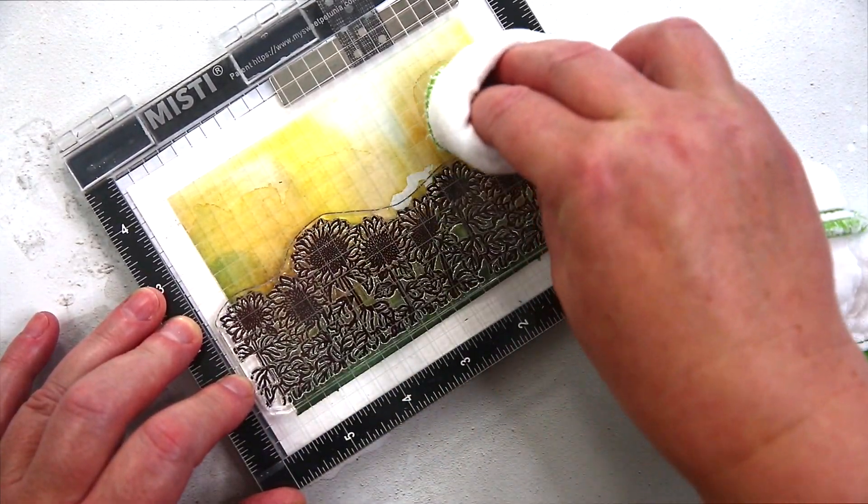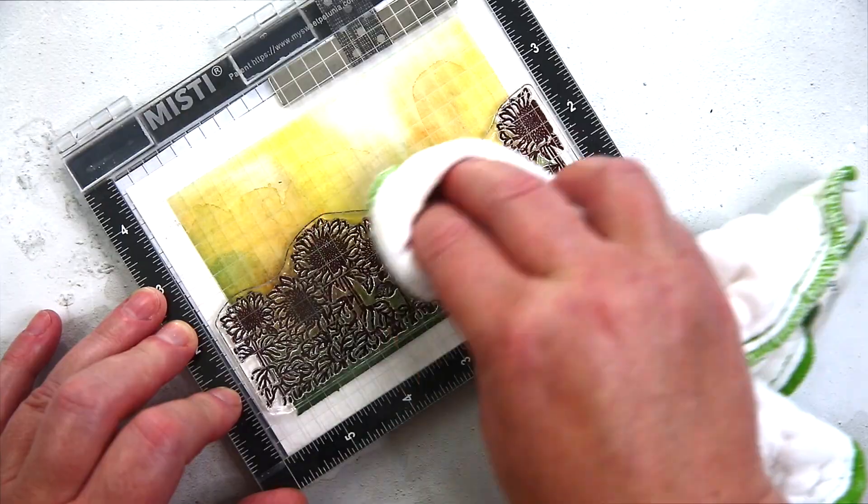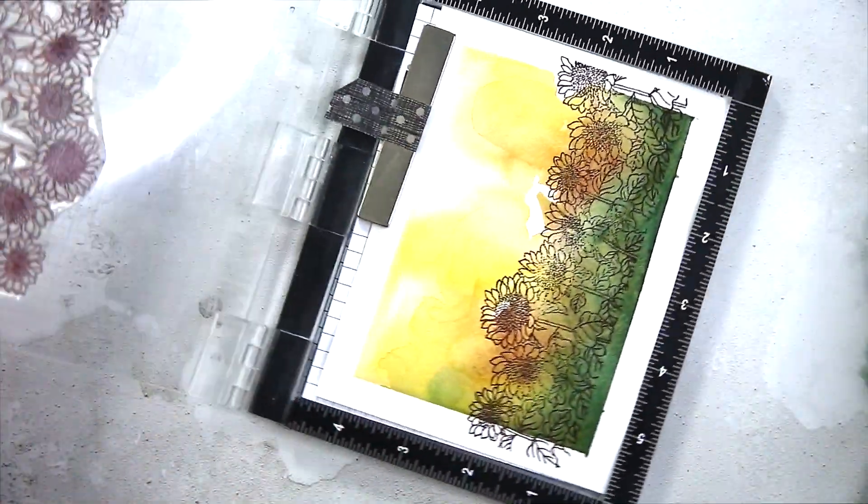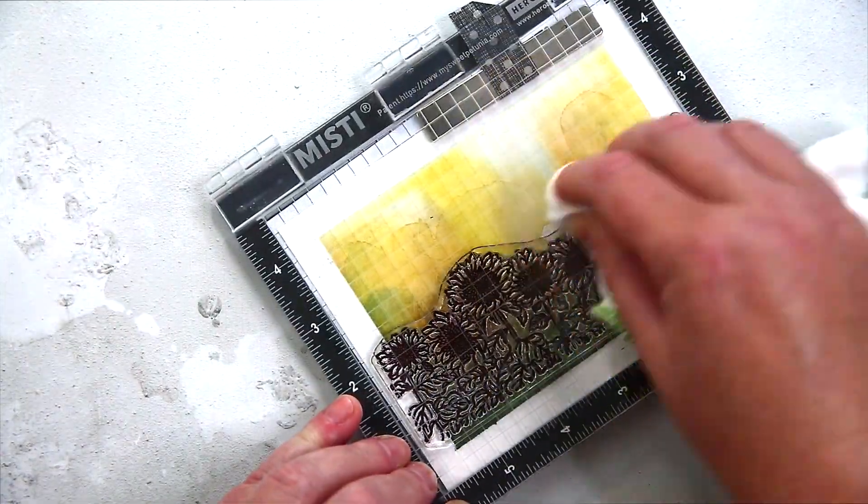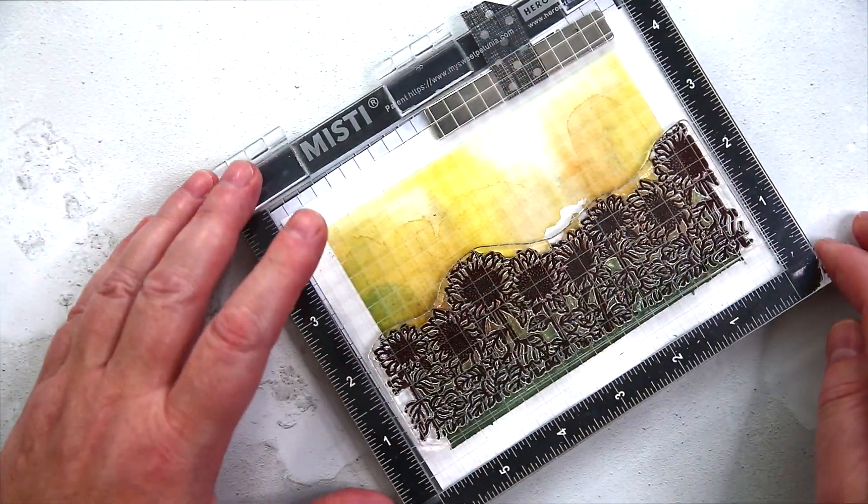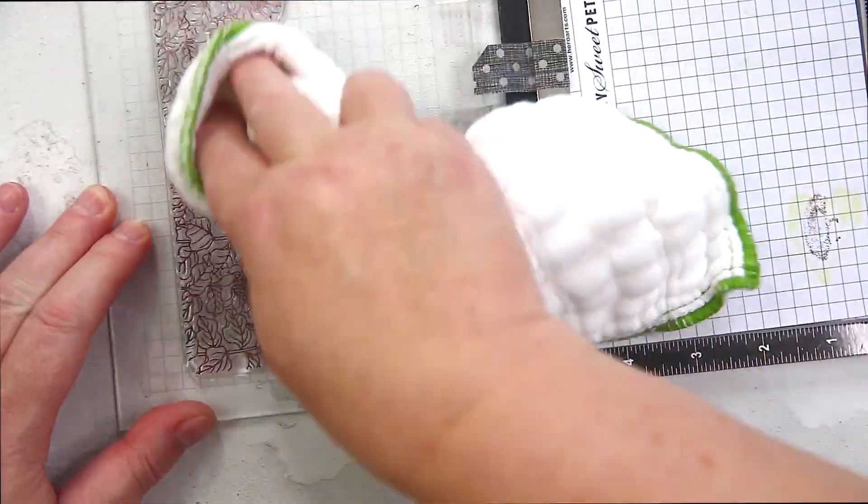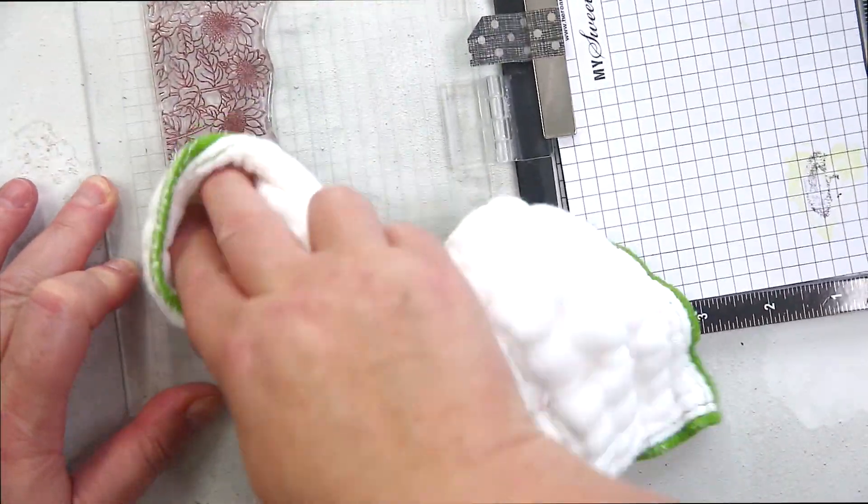I had to stamp the image several times because the cold-pressed watercolor card I used had texture to the surface. This is great for watercoloring, but it does make it a bit tricky to get a good impression first time. However, that isn't a worry when using the MISTI. I just kept inking and stamping until I was happy.